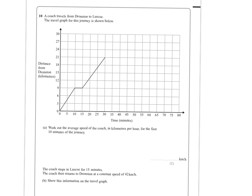So question 10, it says a coach travels from Dronsden to Luscoe and you've got a travel graph shown. First of all, work out the average speed of the coach in kilometres per hour. And this is for the first 10 minutes of the journey.